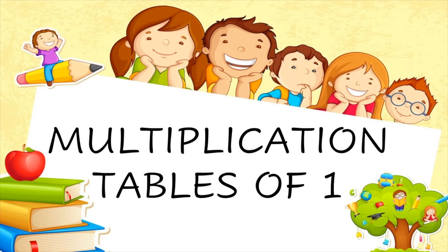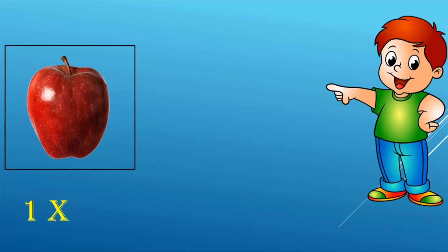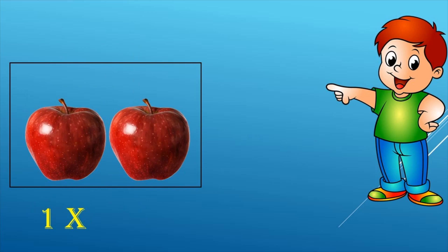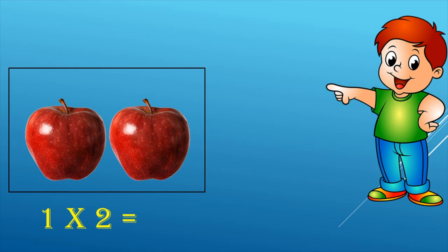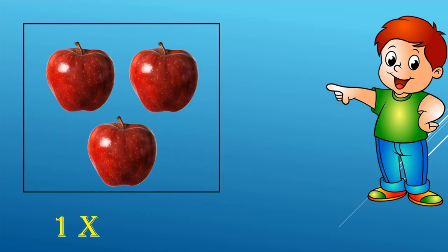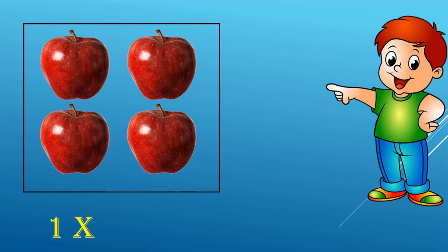We have one set with one apple in it, so one one's is one. One set with two apples in it — one twos are two. One set with three apples in it — one threes are three. One set with four apples in it — one fours are four. One fives are five.